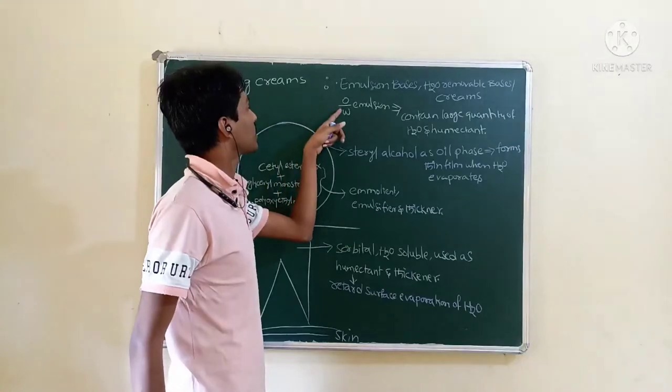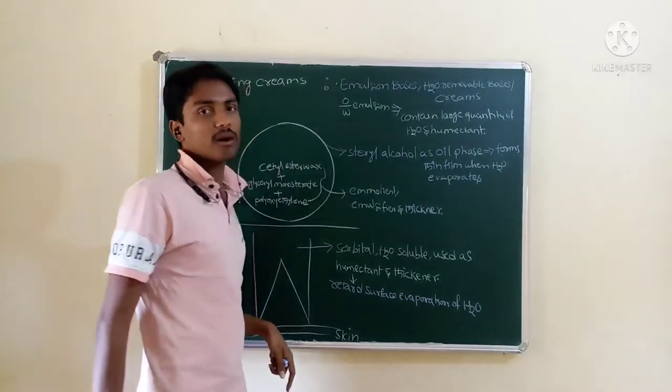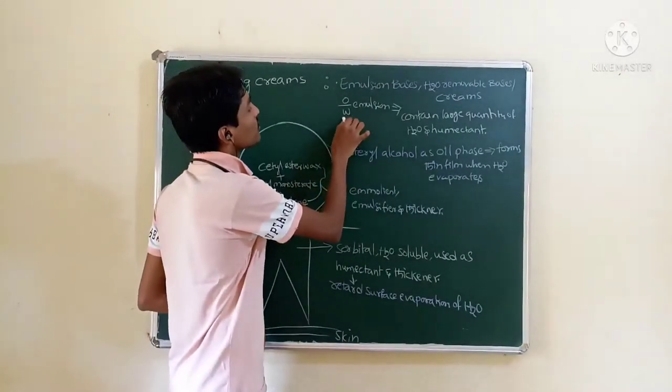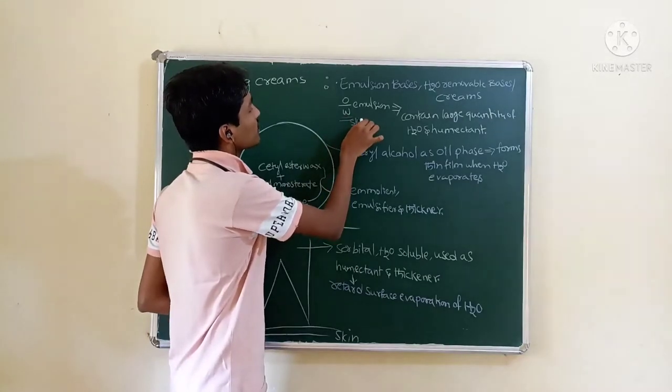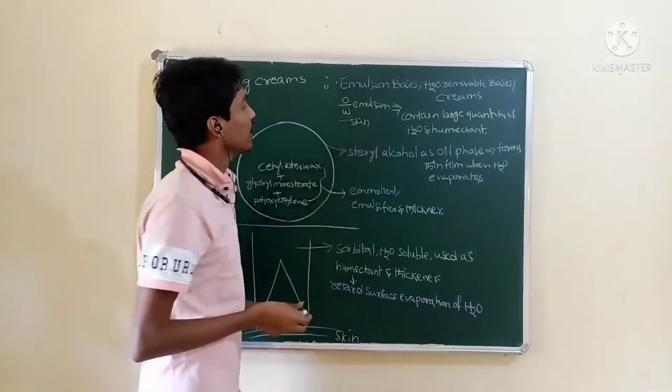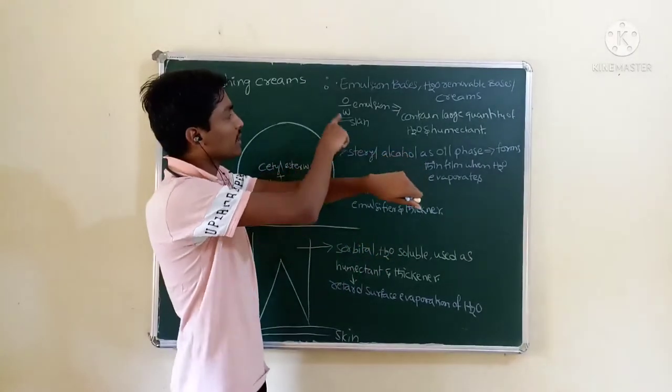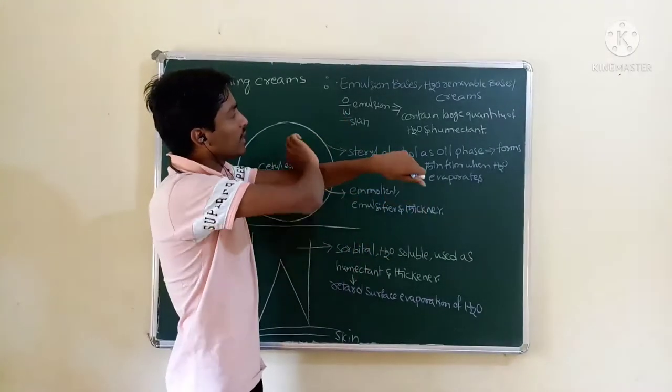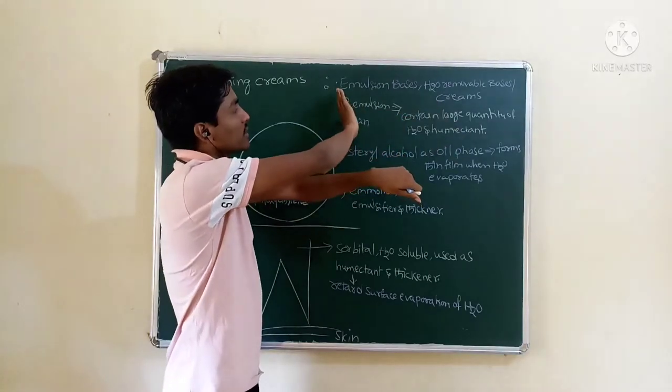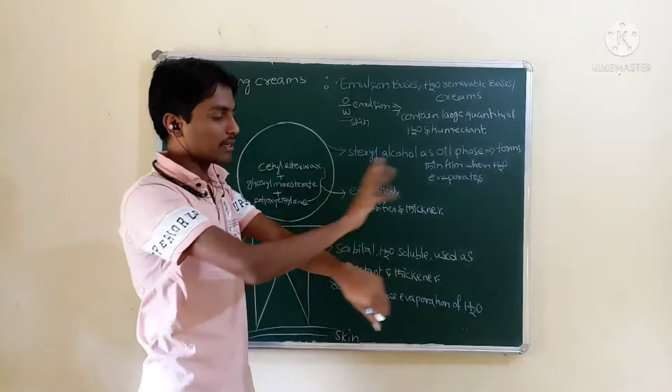So this vanishing cream comes under oil and water kind of emulsion. Whenever water is there as a continuous phase, it is present on the skin. If we will wash with water, due to the presence of water, this water will eliminate this. This system will get eliminated from our skin.